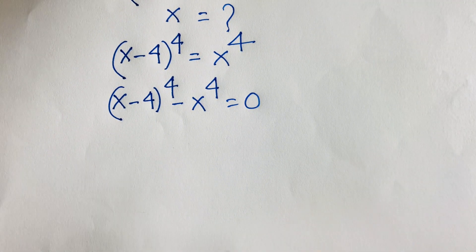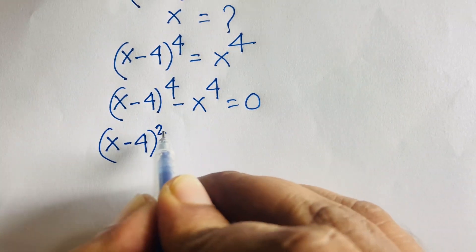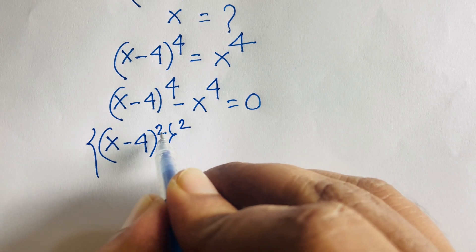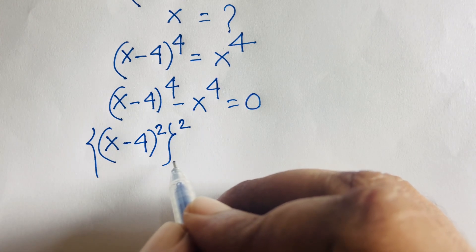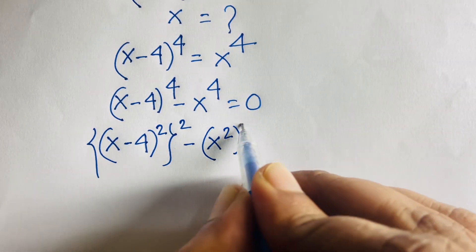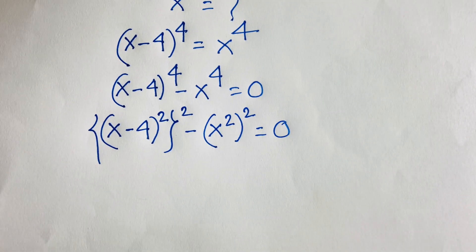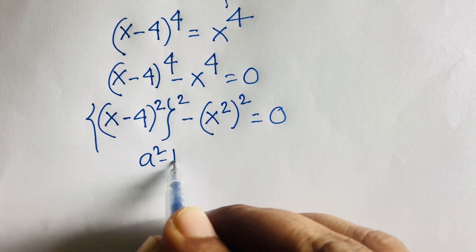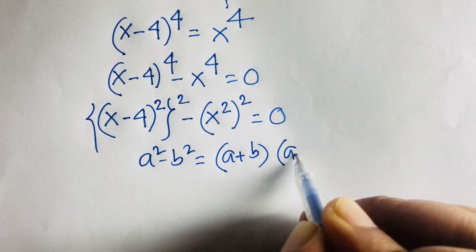This equation becomes [(x minus 4) squared] to the power 2, because 2 times 2 equals 4 according to exponential rules. We can see x squared, whole squared. So this is [(x-4)²]² minus [x²]² equals 0. We know that a squared minus b squared equals (a plus b)(a minus b).